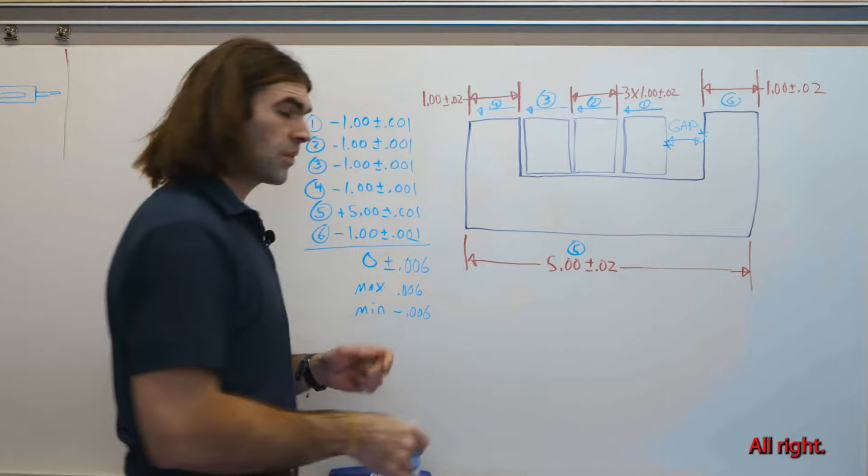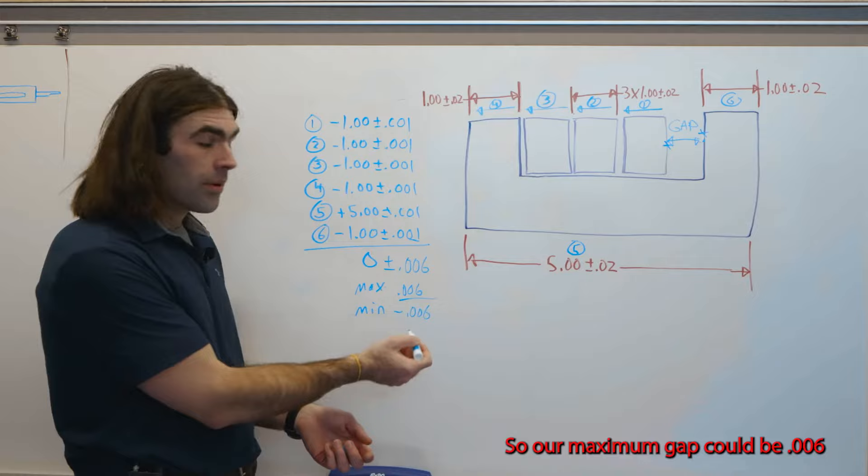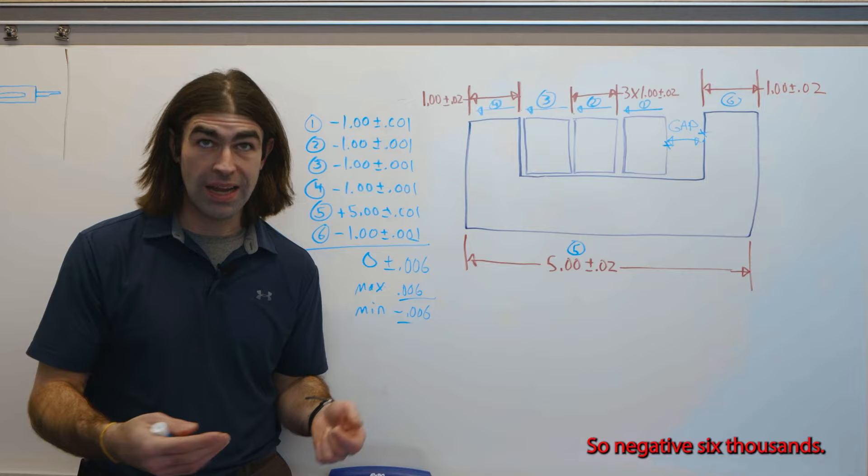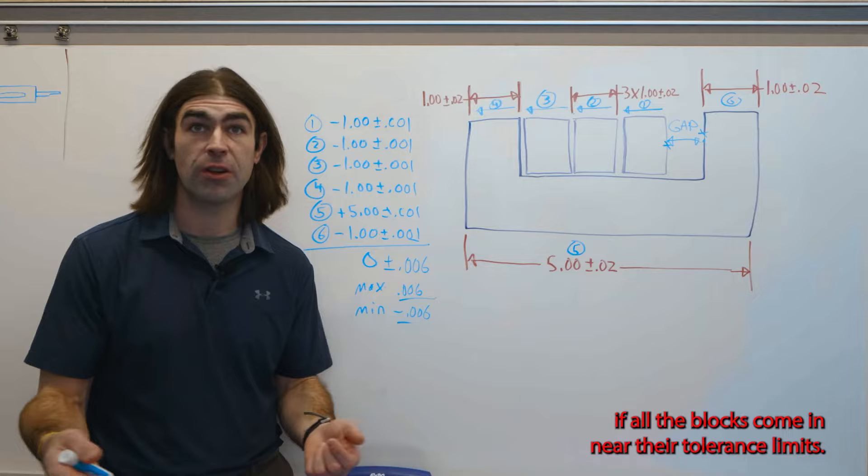All right, so we make all the tolerances plus or minus one thousandths. So that's going to give us plus or minus six thousandths because we have to take them all into account. So our maximum gap could be six thousandths, our minimum gap could still be interference, so negative six thousandths. So this part would be difficult to make or more expensive to make and it still might not meet the requirements if all the blocks come in near their tolerance limits.